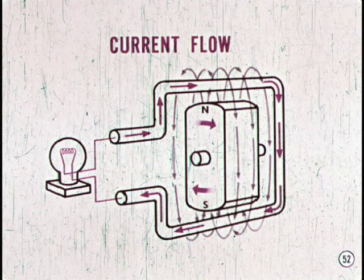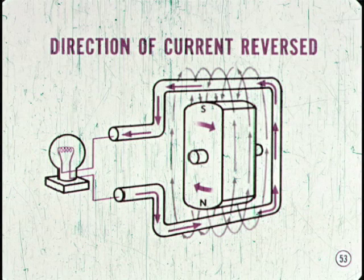Notice the direction of current flow when the north pole is at the top, the south pole is at the bottom, and the magnet is turning in a clockwise direction. Now let's see what happens when the magnet is rotated one half of a revolution. Here, the direction of current flow through the conductor is reversed. That's because the south pole is now at the top and the north pole is at the bottom. The direction of current flow reverses every half revolution. That's why this type of generator is called an alternator.